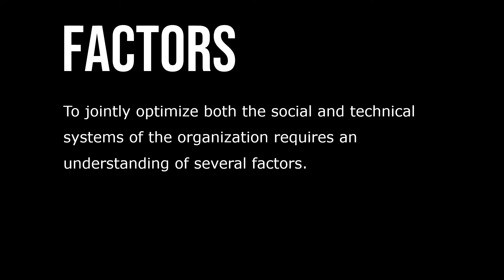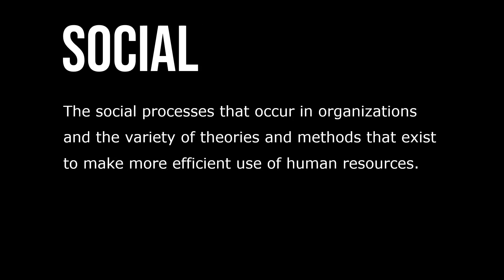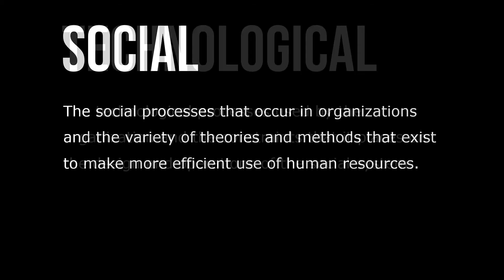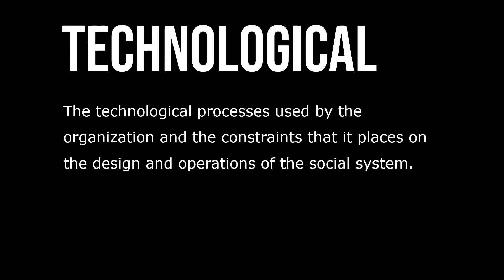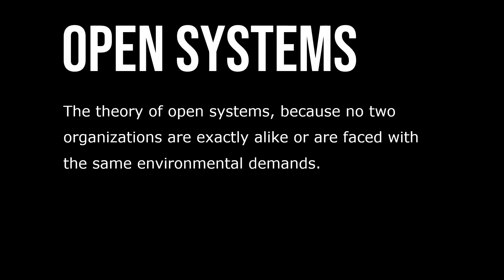To jointly optimize both the social and technical systems of the organization requires an understanding of several factors: the social processes that occur in organizations and the variety of theories and methods that exist to make them more efficient in terms of human resources; the technological processes used by the organization and the constraints that these place on the design and operations of the social system; and the theory of open systems, because no two organizations are exactly alike or faced with the same environmental demands.